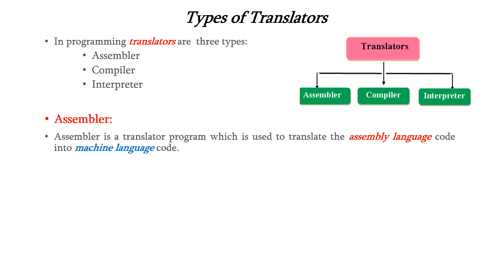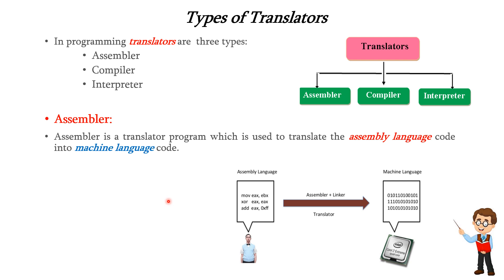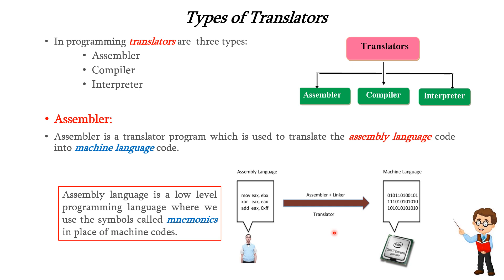First we will see about assembler. Assembler is the translator which translates the assembly language code into the machine language code. This diagram illustrates the concept. The user will write the code in the form of assembly language, then it is translated into the machine language by using the assembler. Assembly language is a low-level language where we use symbols called mnemonics in the place of machine codes. These codes are called mnemonic codes.